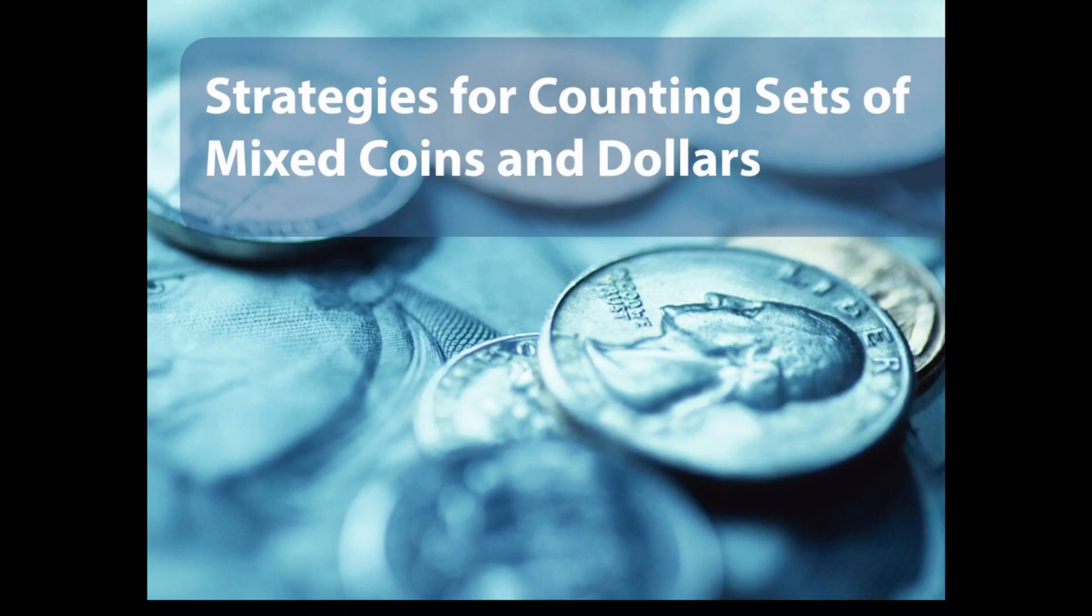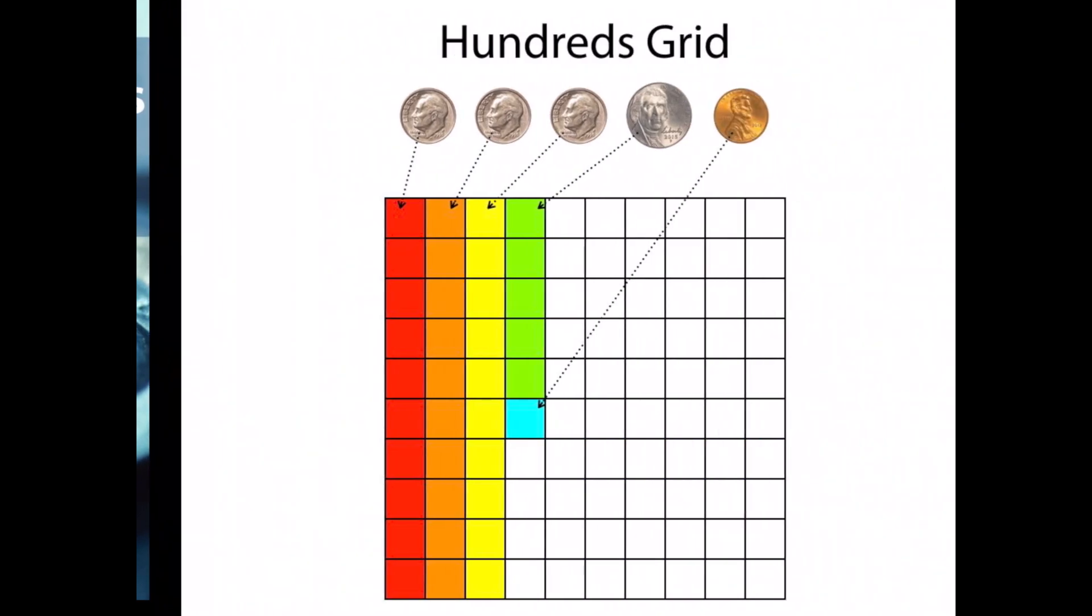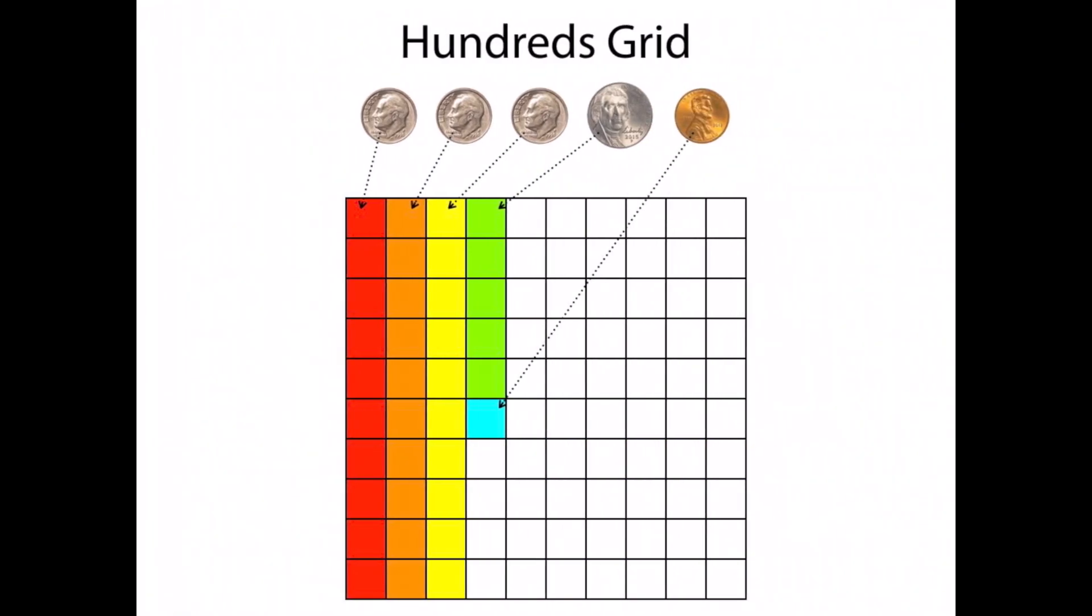First we're going to talk about some strategies for counting sets of mixed coins and dollars. Previously we have been using a hundreds grid in which we are looking at the value of each of the coins and I'm representing it with the correct number on the grid, such as this one with the three dimes filling in a full column, the nickel filling in a half a column, then the penny filling in one square.